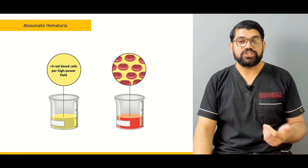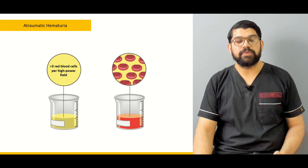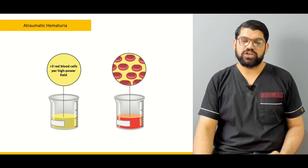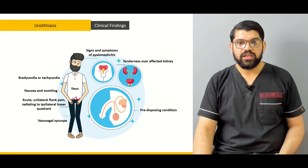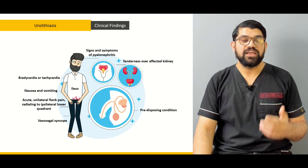Then we'll talk in detail about atraumatic hematuria with classifications including macroscopic and microscopic hematuria. We'll cover the diseases which cause atraumatic hematuria, which includes urolithiasis, glomerulonephritis, and adrenal tubular necrosis. Urolithiasis will be taught in detail because of its importance when working in the emergency department.